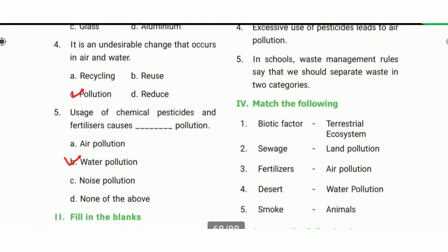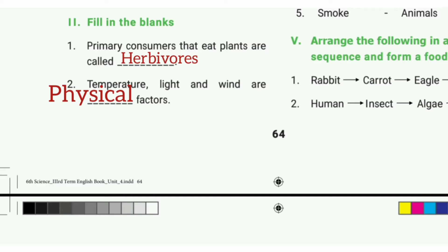4th one: it is an undesirable change that occurs in air and water. The answer is pollution. 5th one: usage of chemical pesticides and fertilizers causes water pollution.